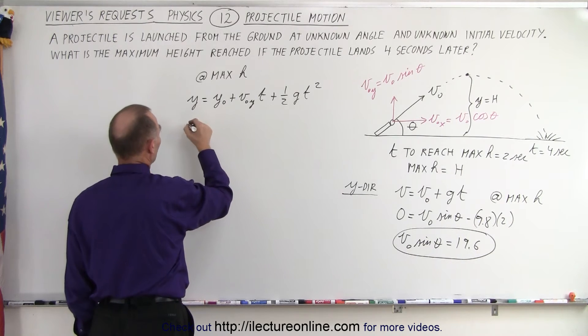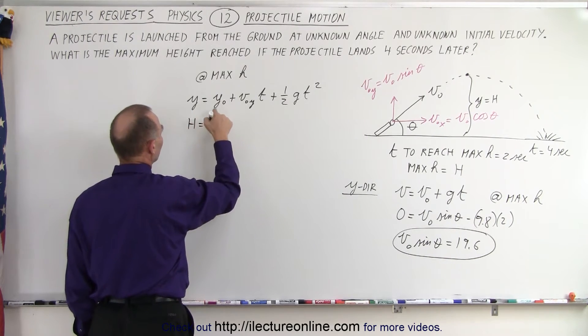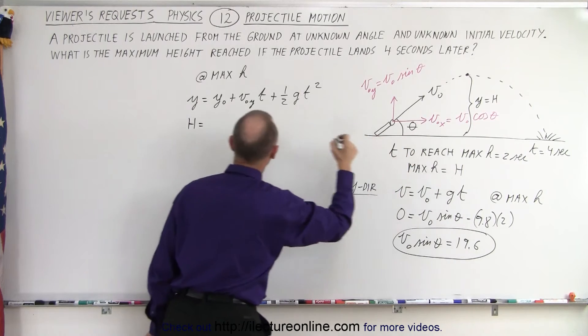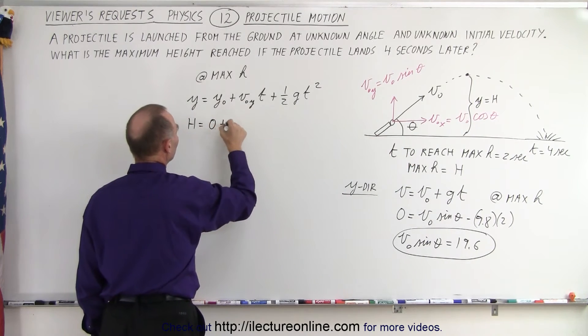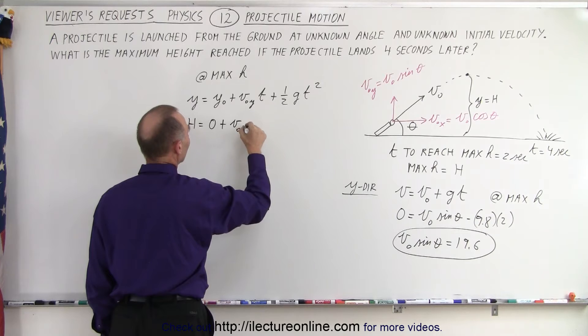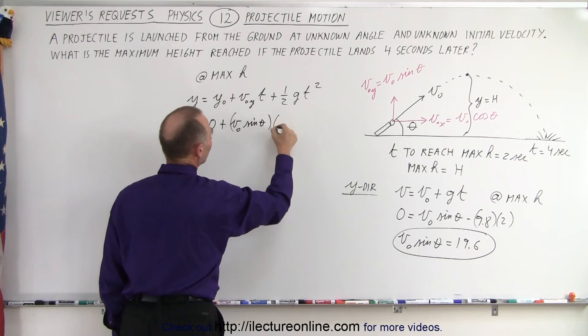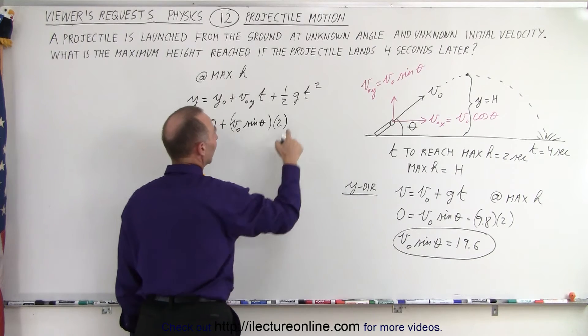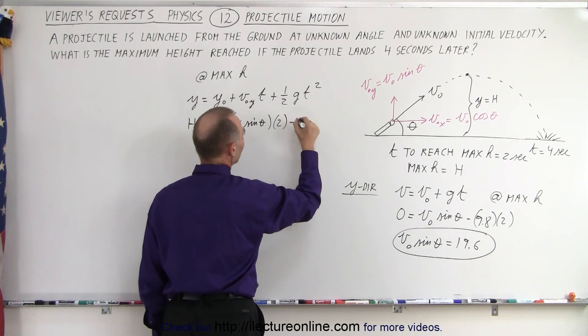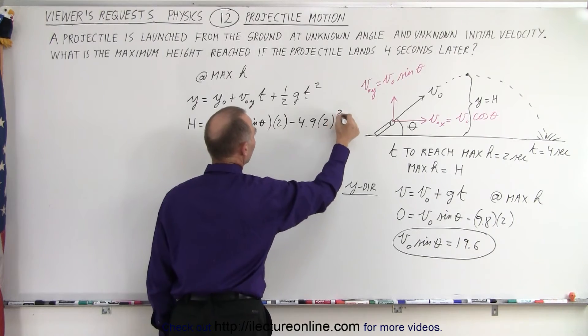The final height is what we're looking for, which is h. The initial height starting from the ground equals zero. Initial velocity in the y direction is v initial times sine of theta times t, but t is two seconds, and g is minus 9.8, so that's minus 4.9 times two squared.